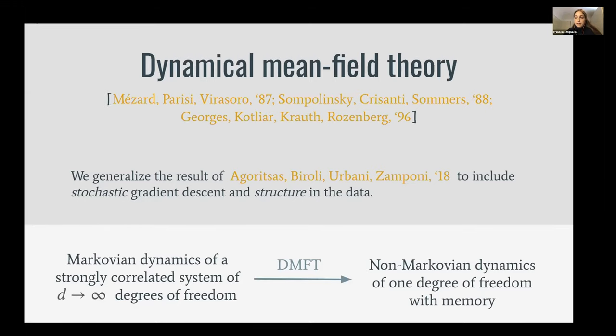They studied the perceptron with random inputs, and we extend this result to include the stochasticity of the gradient and the structure in the data that allows us to study the generalization gap. Dynamical mean field theory allows us to perform a dimensional reduction from the stochastic gradient flow—a dynamics of an infinite number of variables that are strongly correlated—to the evolution of just one degree of freedom at the price of adding memory to the dynamics.